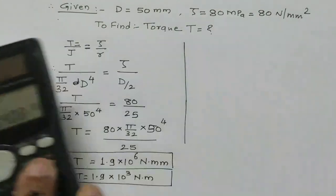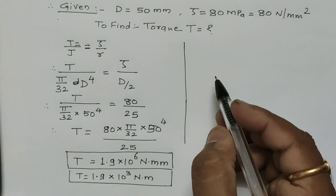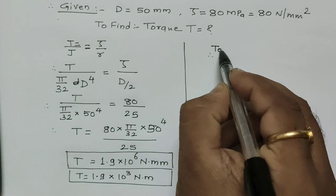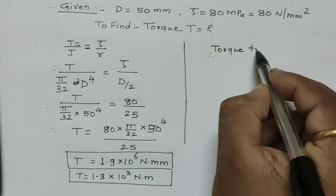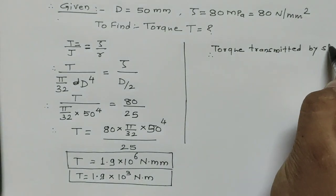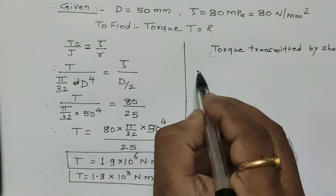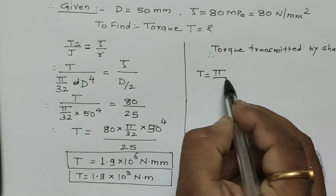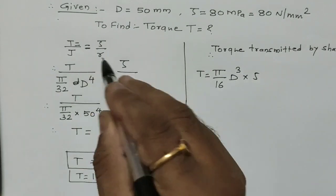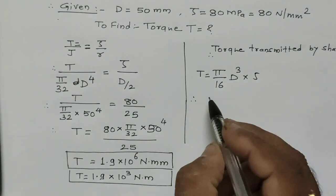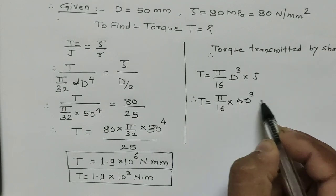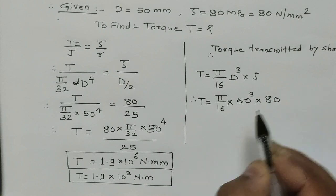Now we will calculate by the derived equation, and that is torque transmitted by shaft: T = (π/16)D³τ. This equation is derived from the basic torsional equation.